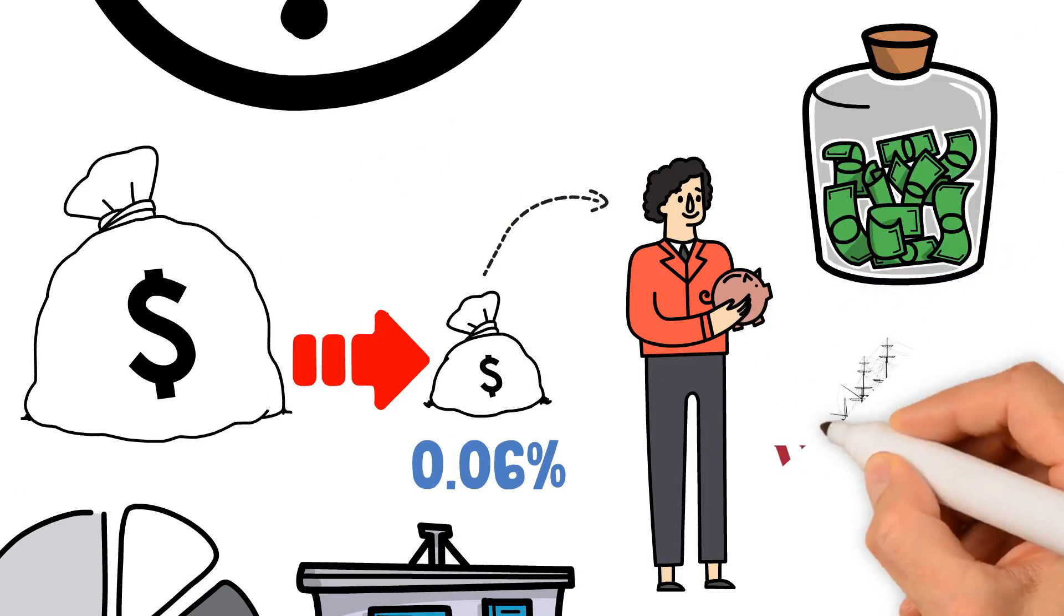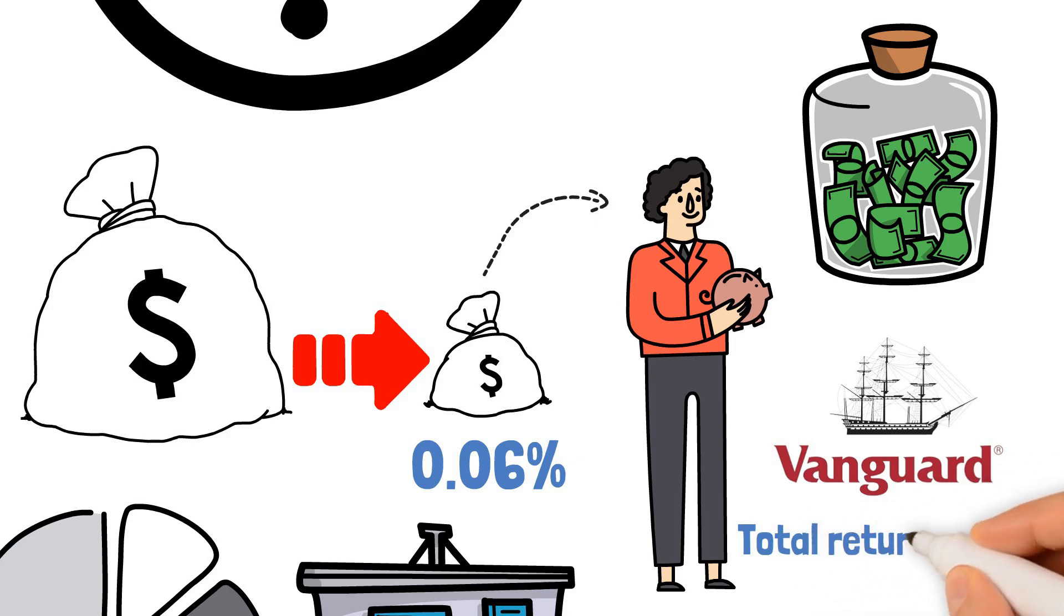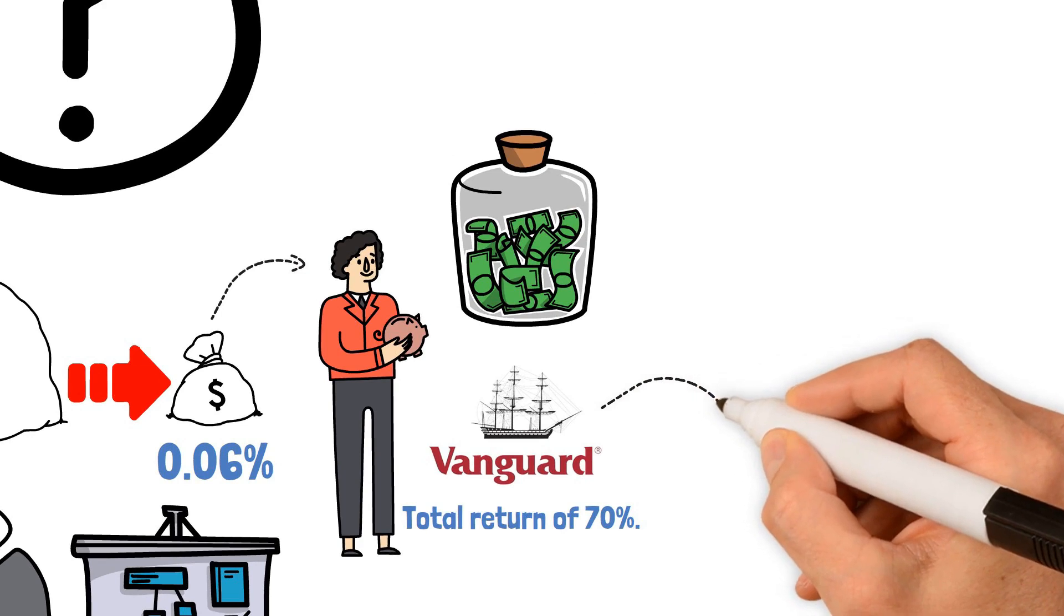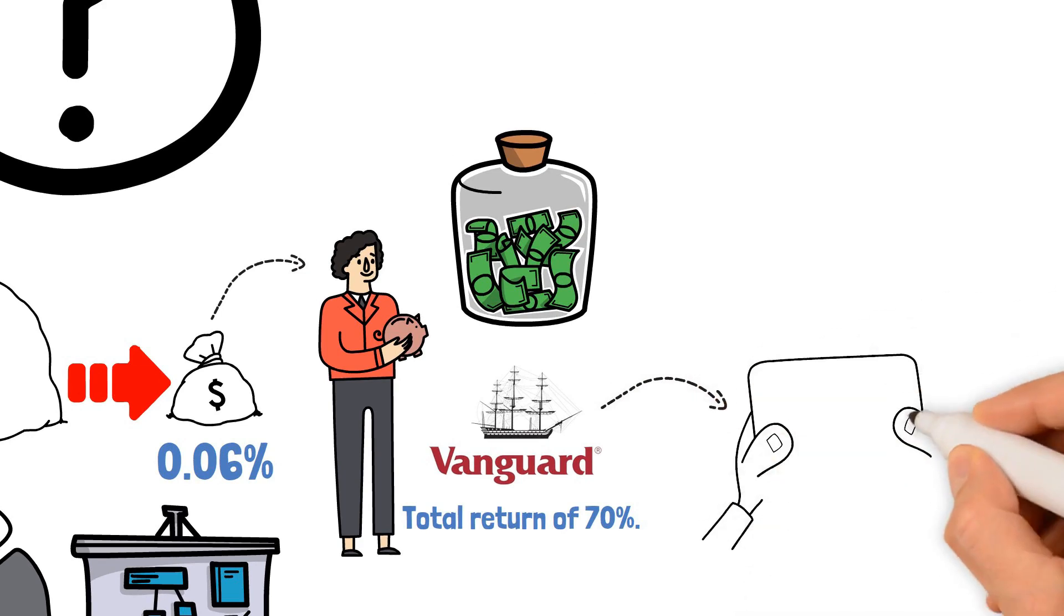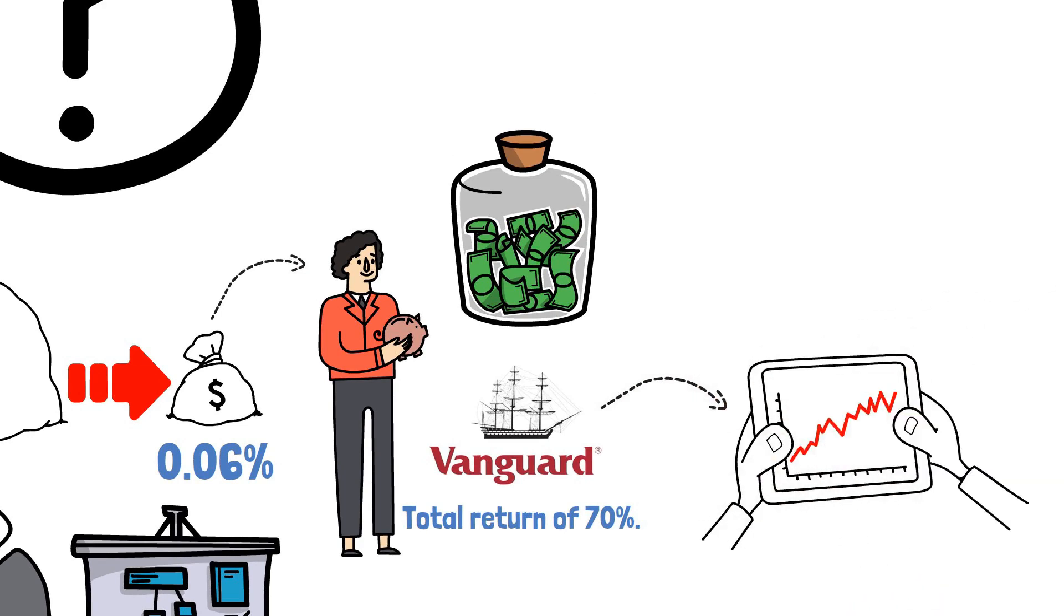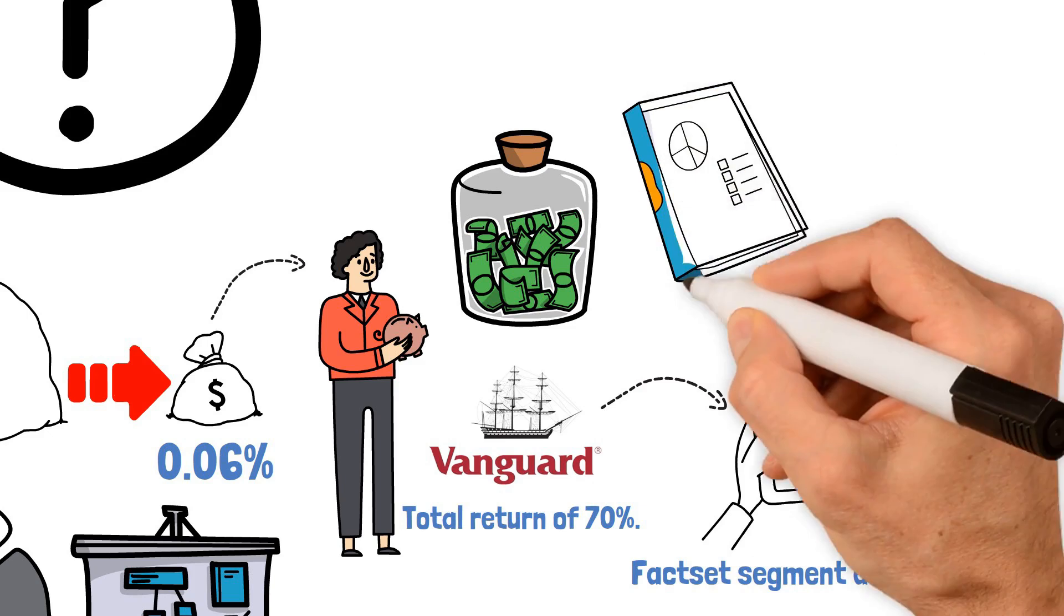Over the past five years, the Vanguard High Dividend Yield ETF has demonstrated a total return of 70%. This places its share price growth in the middle of the pack among similar ETFs, surpassing the FactSet segment average of 42%. Such robust performance showcases the ETF's ability to deliver steady returns to its investors.